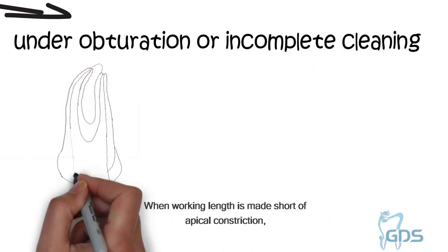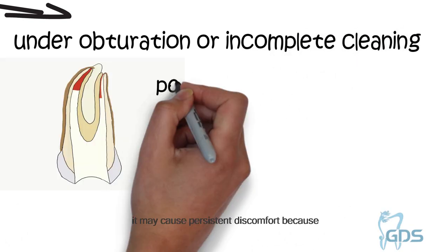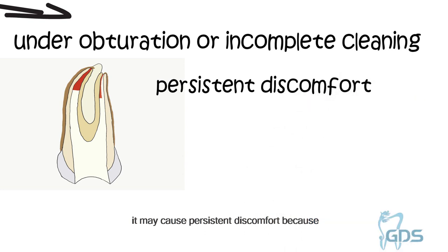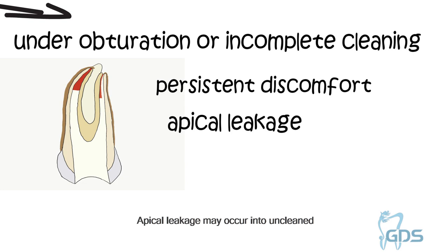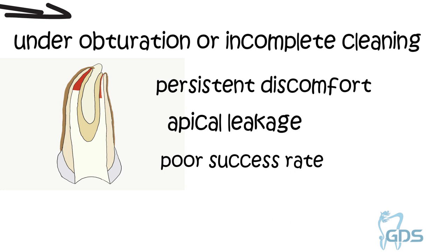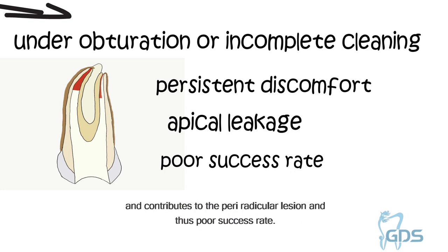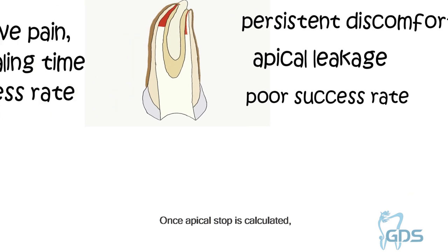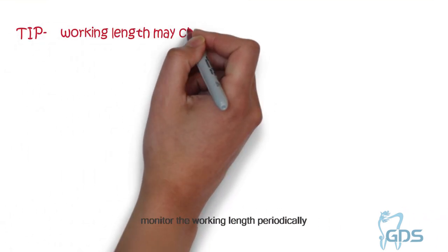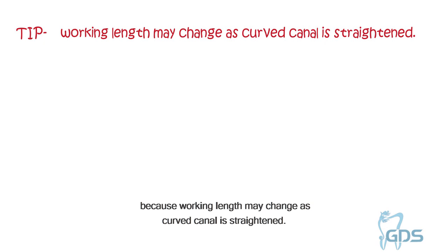When working length is made short of the apical constriction, it may cause persistent discomfort because of incomplete cleaning and underfilling. Apical leakage may occur into the uncleaned and unfilled space short of the apical constriction. It may support the continued existence of viable bacteria and contribute to periradicular lesion and thus poor success rate. Once the apical stop is calculated, monitor the working length periodically because working length may change as the curved canal is flattened.